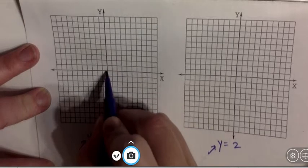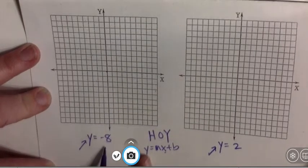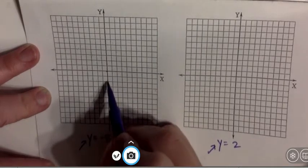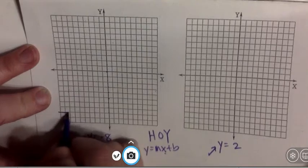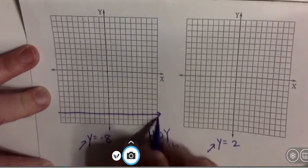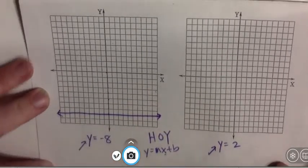We go from (0,0) and I'm going to go down on the y-axis for this one to negative 8: 1, 2, 3, 4, 5, 6, 7, 8. I'm going to draw a horizontal line and I'm done.